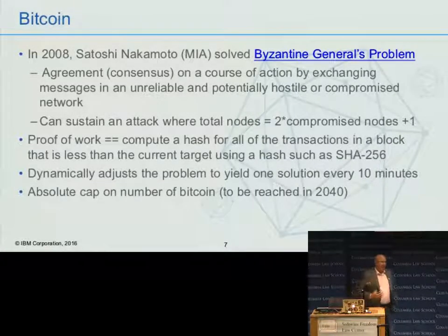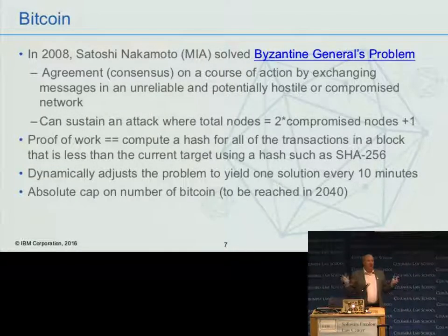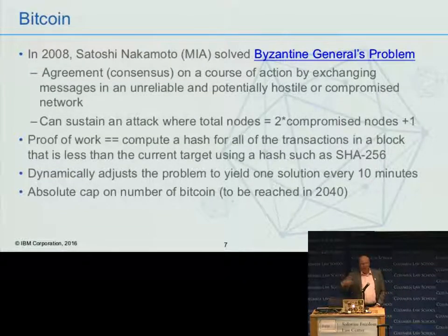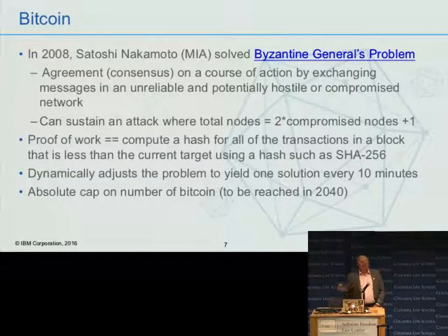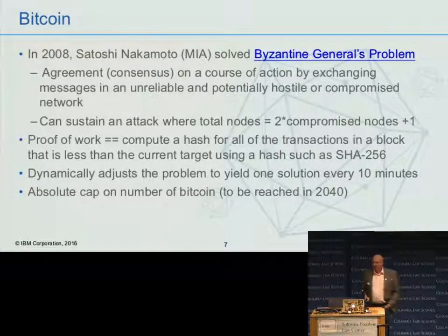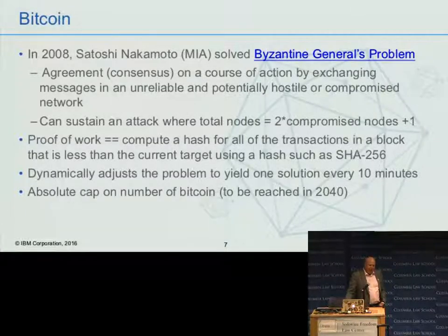Let's talk a little bit about Bitcoin. Bitcoin — Satoshi Nakamoto — we don't know if this person is real or not. I have a T-shirt that says I am Satoshi. I coined that when we were starting the Hyperledger project and David Walsh was going through and trying to claim that he was Satoshi and failed to do so. There's a lot of different theories that Satoshi is not one human being, but maybe multiple people who collaborated together and developed the Bitcoin white paper.